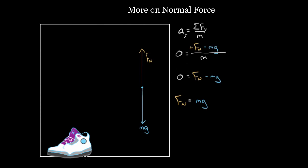If you relax any of those requirements, normal force is no longer going to equal mg. It was also on a horizontal surface — if you relax that, you could have normal forces in the x direction. So let's slowly, one point at a time, relax some of these requirements and see what that does to the normal force. What if we let the shoe sit on the ground and I push down on it? I'm pushing down with a force I'll call F1, pointing downward. How would that change things?